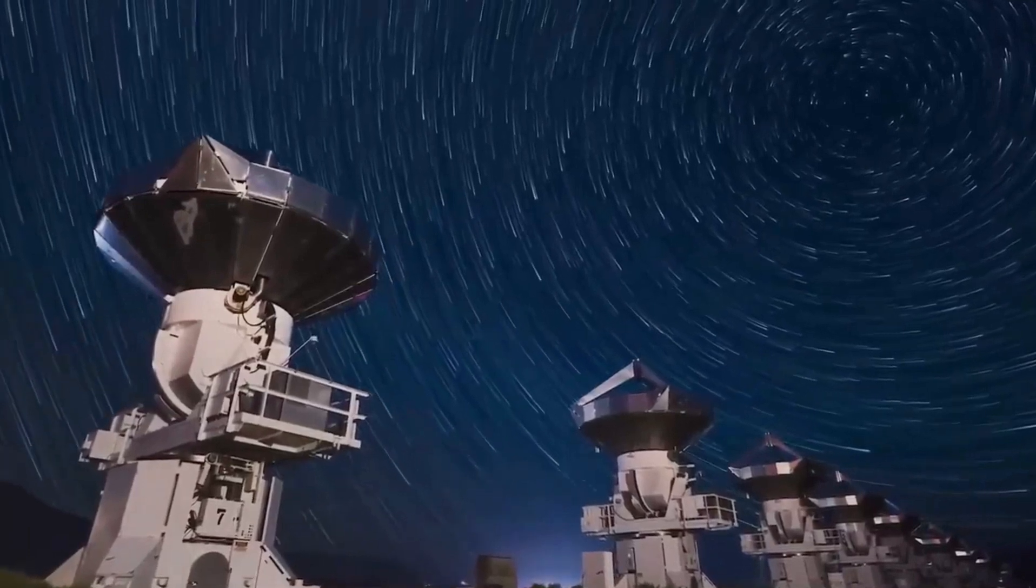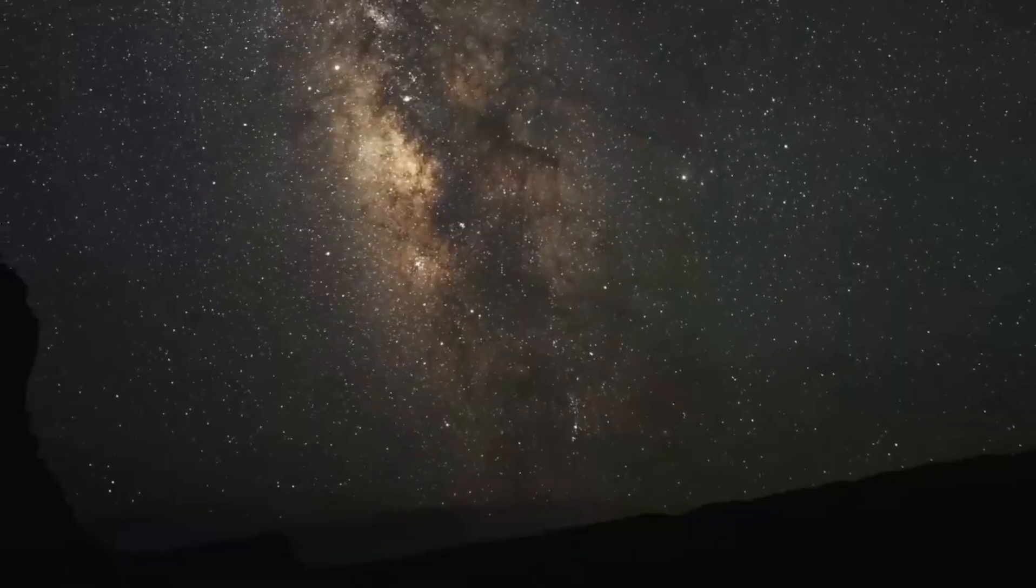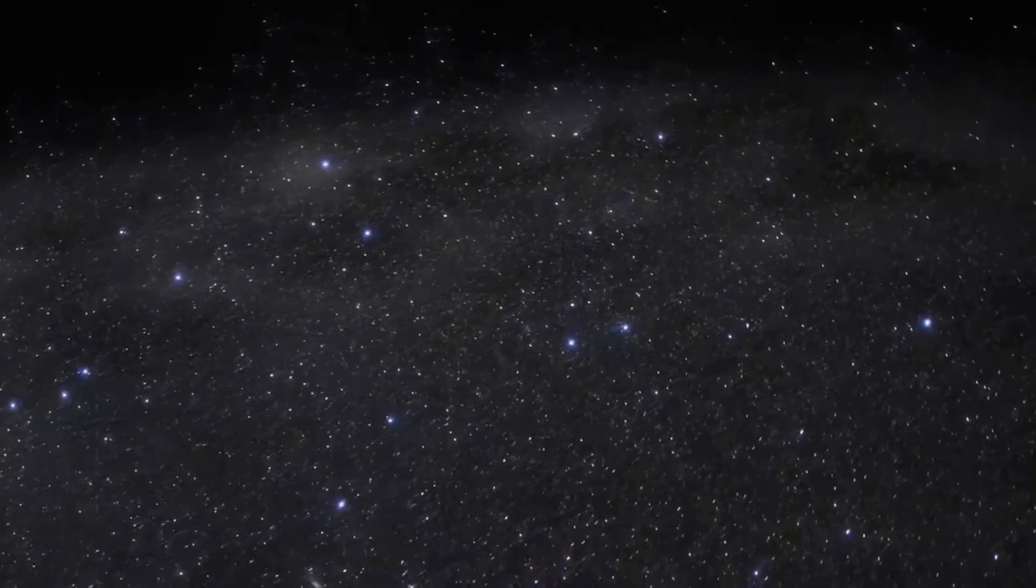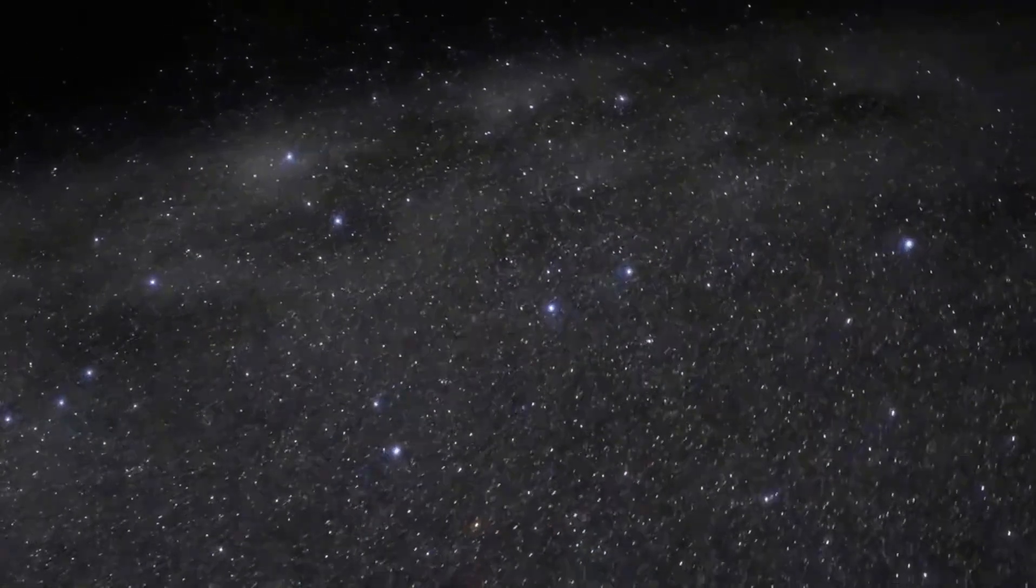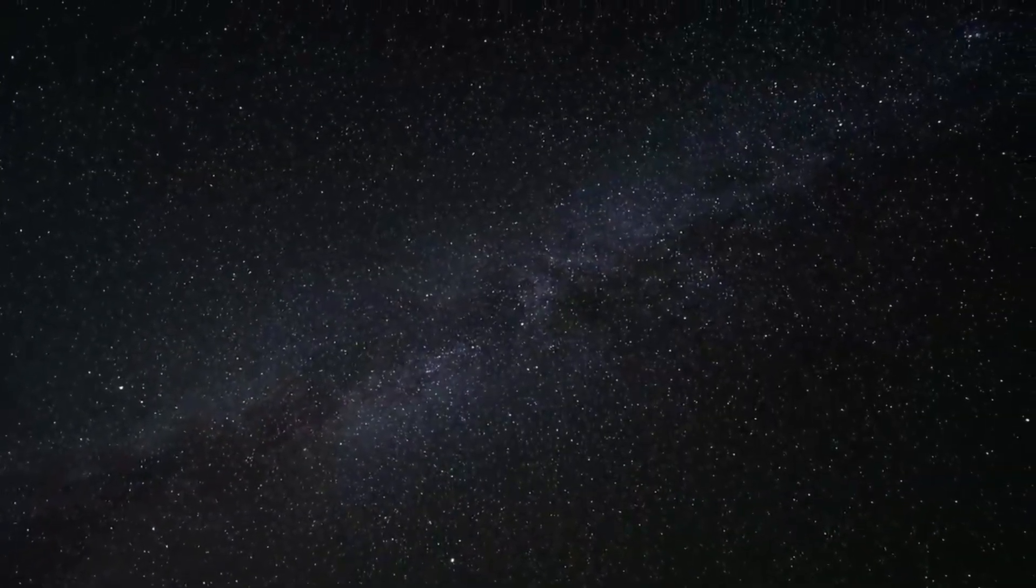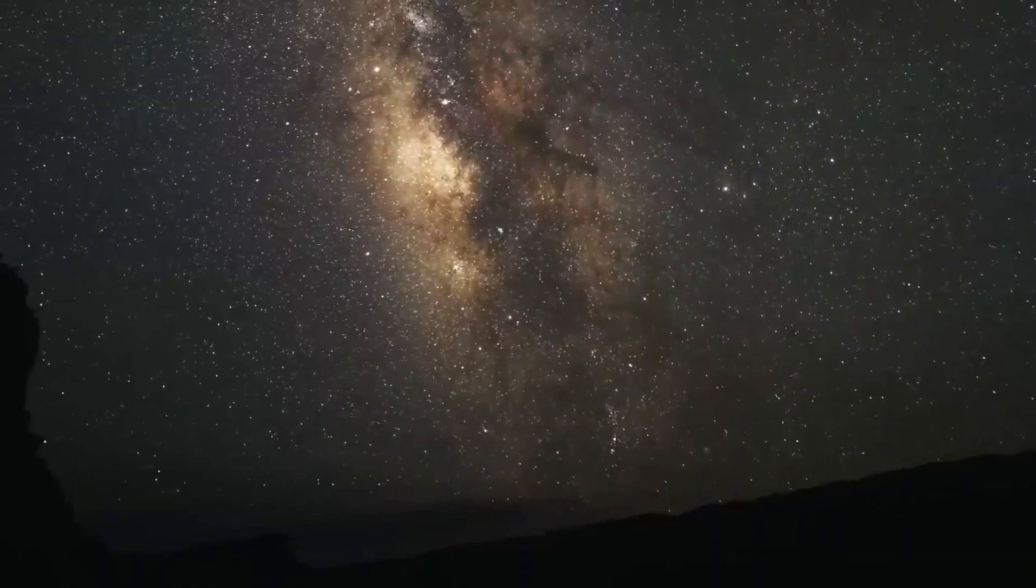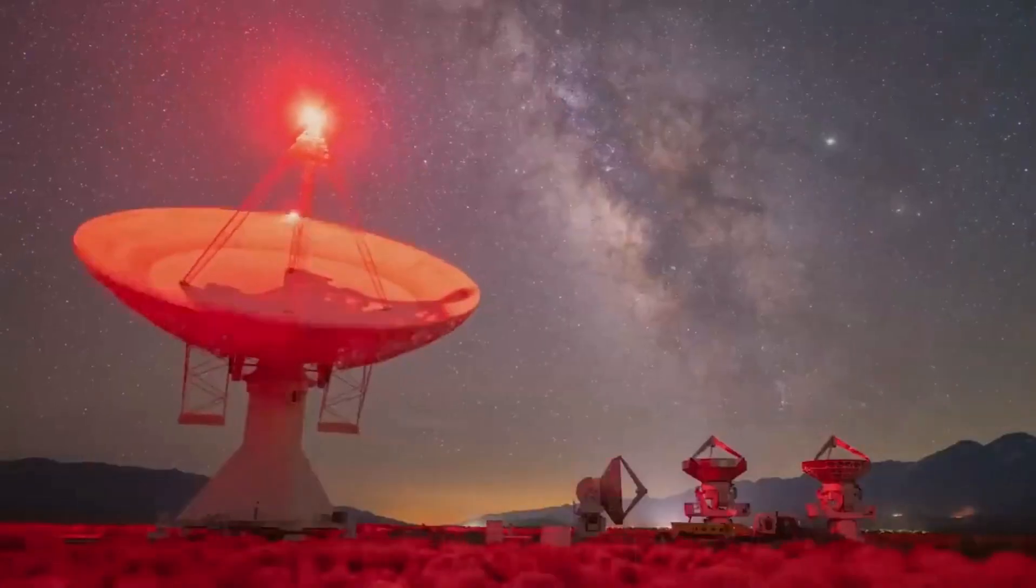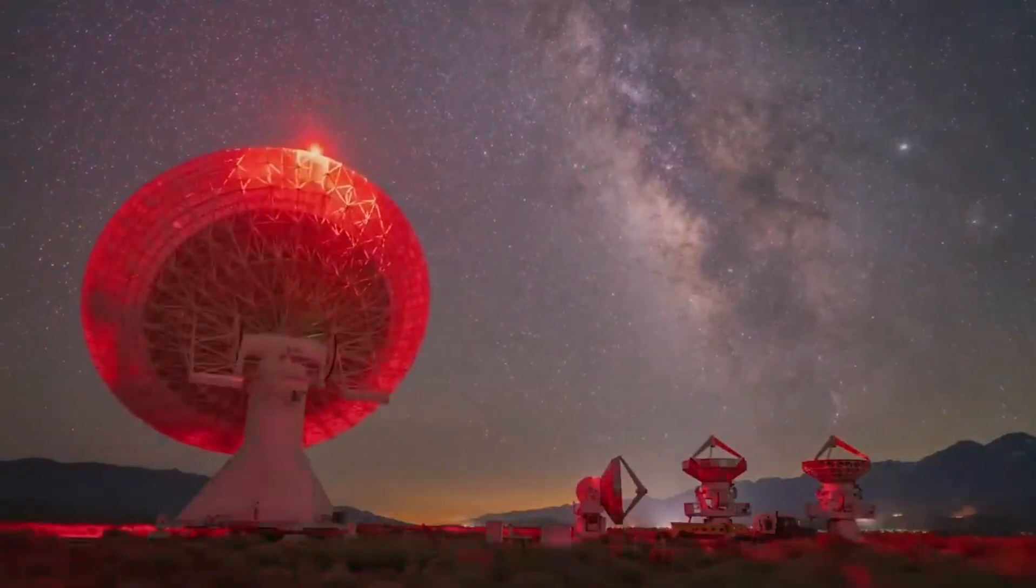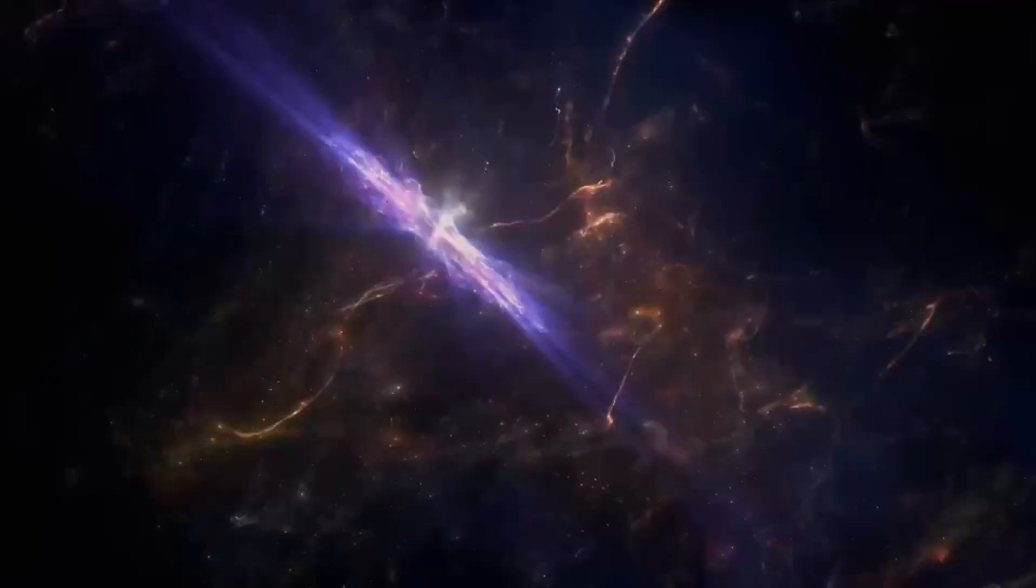Betelgeuse loses about one solar mass every 10,000 years. The red star is surrounded by a nebula because this material is being ejected unevenly from the star in all directions. A cloud of material 250 times larger than the star surrounds Betelgeuse. The size of this nebula is also thought to be 30 astronomical units or 30 times the solar distance. The Sun and Neptune, the furthest planet in the solar system, are separated by this distance.